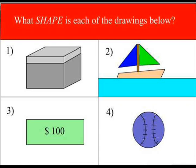Answers. Number one: Square. Number two: Triangular. Number three: Rectangular. Number four: Round.